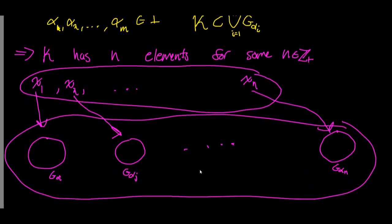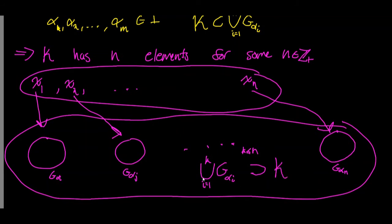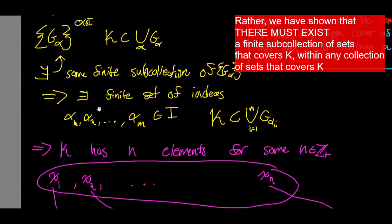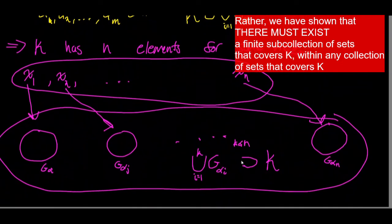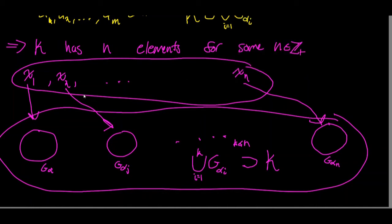Thus, the union from I equals 1 to some K, where K is less than or equal to N, of all of these G alpha I's contains K in any scenario. Therefore, we have found a finite sub-collection — in any case where K is finite — that must contain K. Said differently, a finite number of elements can only occupy a finite number of these open sets, and no more.